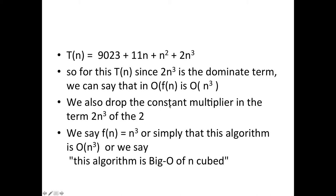And it says here we drop the constant multiplier 2 from 2n cubed - we don't leave in the 2. So we say that f(n) is n cubed, or simply that this algorithm is O(n cubed). In English, when we're talking about an algorithm we say this algorithm is Big-O of n cubed.